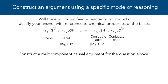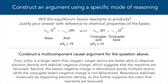Let's try another example. Will the following equilibrium favor reactants or products? Justify your answer with reference to chemical properties of the conjugate bases in a multi-component causal argument. Here's a sample answer: First, sulfur is a larger atom than oxygen. Larger atoms are better able to disperse electron density and stabilize negative charge, which suggests that the reactants are favored. Second, the base's negative charge is delocalized across multiple atoms, while the conjugate base's negative charge is not delocalized. Resonance stabilizes molecules by dispersing electron density, so this further supports the claim that reactants are favored. Note that even though oxygen is more electronegative than sulfur, experimental pKa evidence tells us that atomic size is the dominant factor when comparing atoms in the same column of the periodic table, while electronegativity dominates across a row.